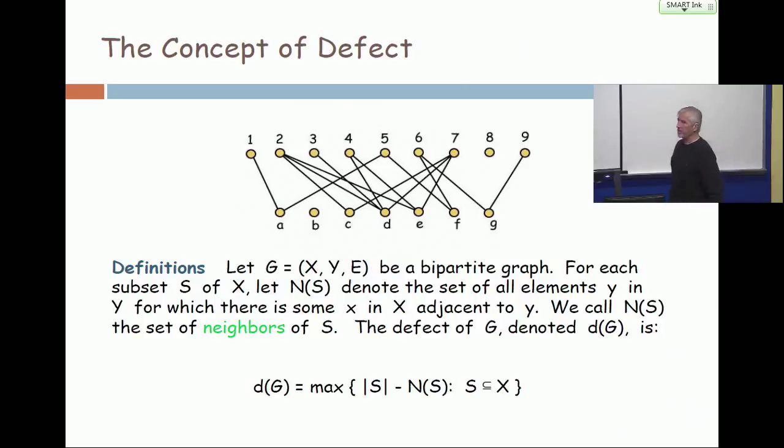All right, now, the defect of the graph is the maximum over all subsets of the cardinality of S minus the number of neighbors of S, where S is a subset.